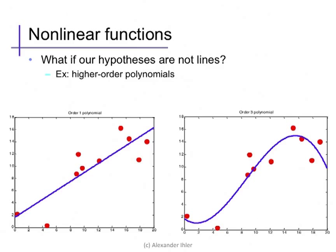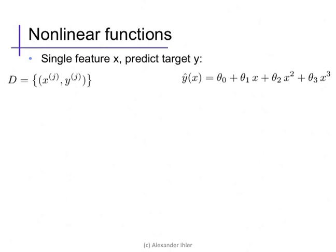So what if we want to learn regression functions that aren't lines? For example, perhaps a cubic or other polynomial regression function. From this viewpoint, we'd like to use a scalar x to predict y using a polynomial function. So y hat will be theta zero plus theta one x plus theta two x squared plus theta three x cubed.